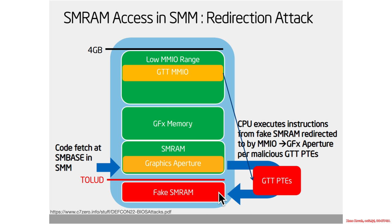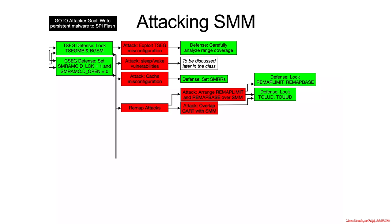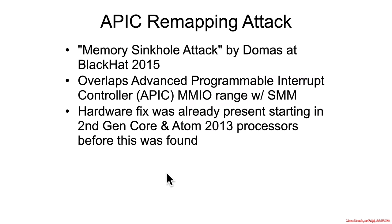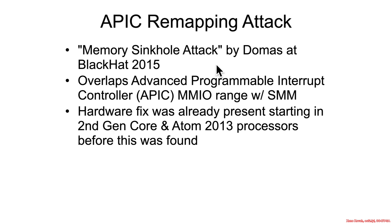The net result is that an attacker can read and write SMRAM when they're not supposed to. The next attack is overlapping the APIC — Advanced Programmable Interrupt Controller — with SMM. In the memory sinkhole attack by DeMoss at 2015, he overlapped the APIC, which is a memory-mapped IO range, with SMM. He noted that a hardware fix was added into second-generation cores and newer, around circa 2013, so Intel had closed the fundamental hole in hardware by the time this was found.